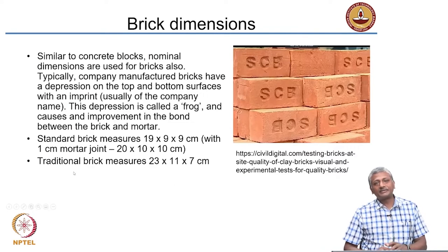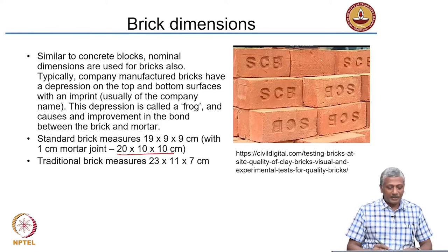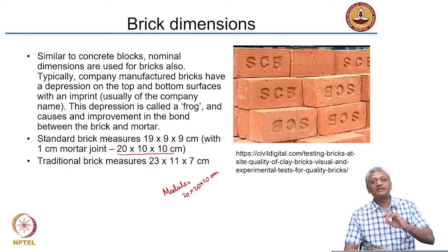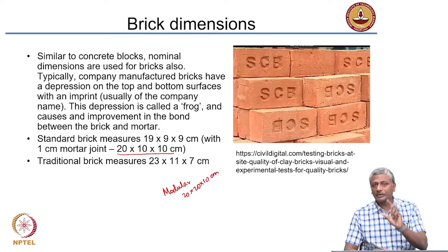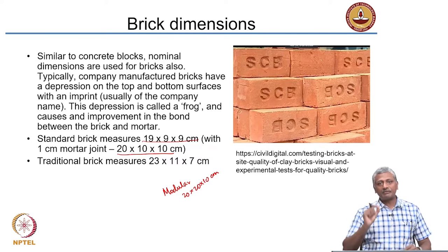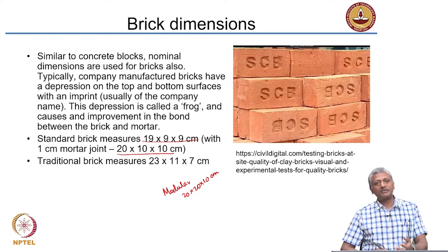Let us talk about brick dimensions. The modular dimension is typically written as 20 by 20 by 10 centimeters, which assumes a 1 centimeter thick layer of mortar around the brick. The actual size of the modular brick is 1 centimeter less — that is 19 by 9 by 9. If you go to a construction site and pick up a brick, it is not going to be 10 by 10 by 20. The modular brick is essentially for design and drawing purposes and is not encountered in practice.